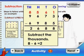Subtract the thousands. 8 minus 6 is equal to 2.